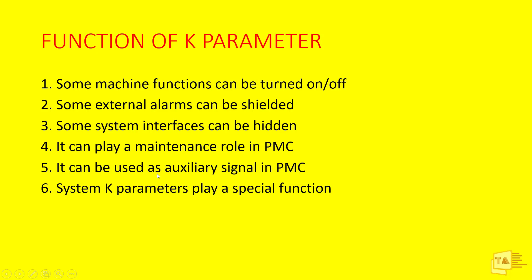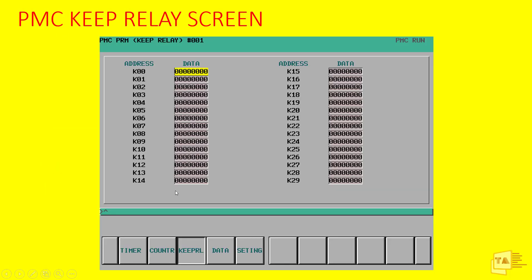There are normal K Parameters and special System K Parameters, both falling under the Keep Relay category — I'll show these later. For the PMC Keep Relay screen, if you open it you will find a screen with an address column and a data column. For example, K0 represents an octal number system where K0.0 through K0.7 are 8 bits, then K1.0 through K1.7, and so on. From this screen we can bypass signals. In newer FANUC models and DCS PMC, the Keep Relay screen looks the same.